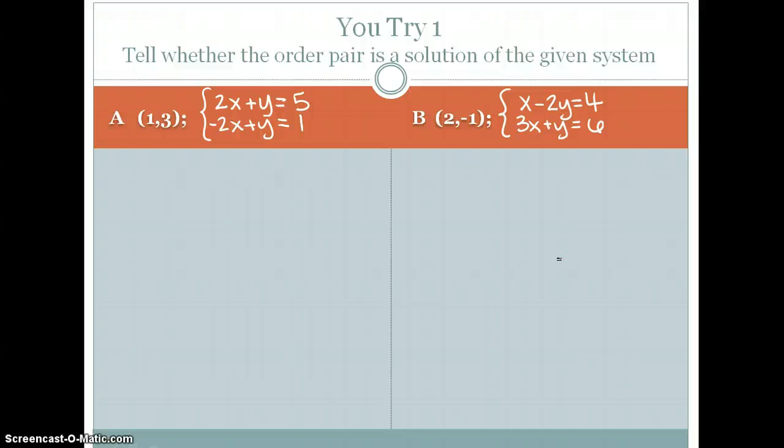And then also B, which is (2, negative 1) into the system of x minus 2y is equal to 4 and 3x plus y is equal to 5. Alright. Make sure you can complete both of these. Solutions will be posted later.